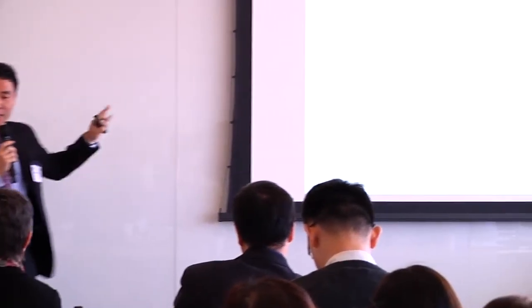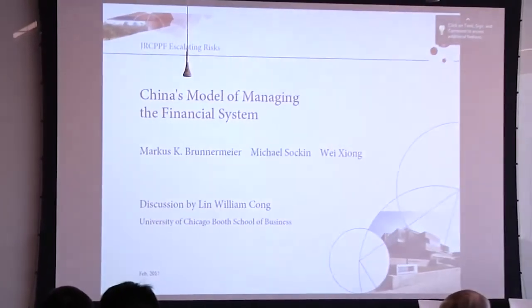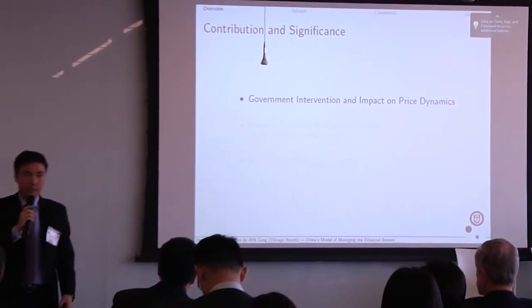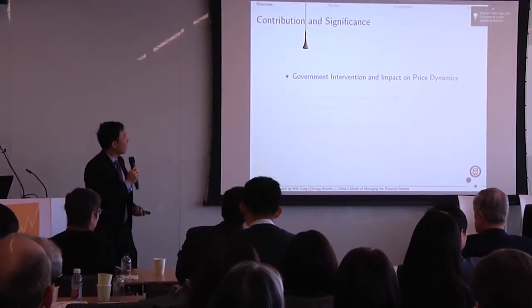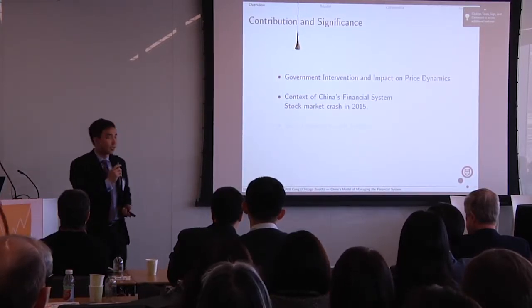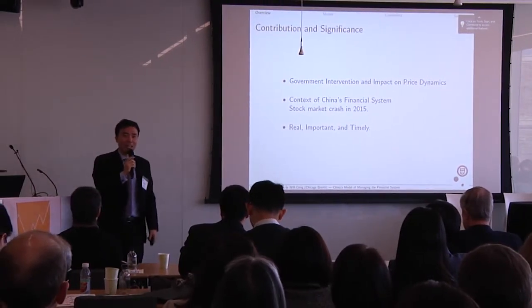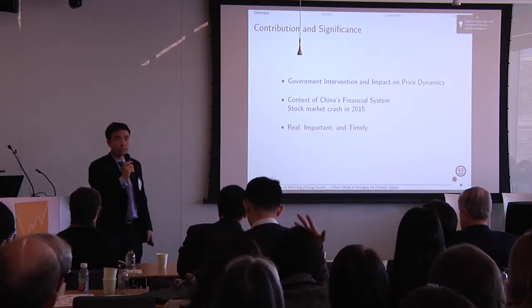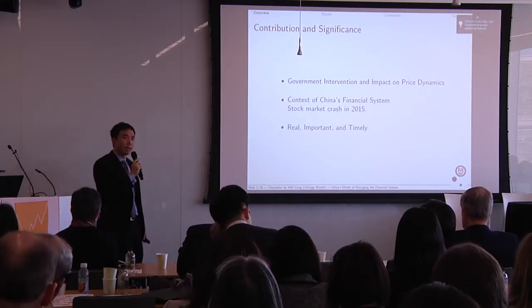This is Professor William Kong, who is teaching at Chicago Business School. Besides economics, he has a background in physics and has a publication in Genome Mechanics Engineering. He remarks: 'This is truly a pleasure to read and discuss this paper. The paper is on government intervention in China and how it impacts price dynamics, in the context of China's financial system and primarily motivated by the stock market crash in 2015. My overall assessment is that the model captures something that really happened in China, and it is important not only for China but has broader implications.'